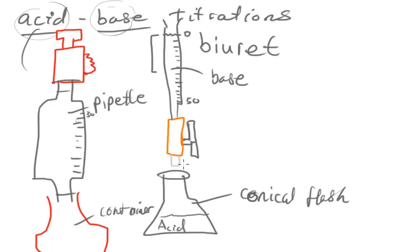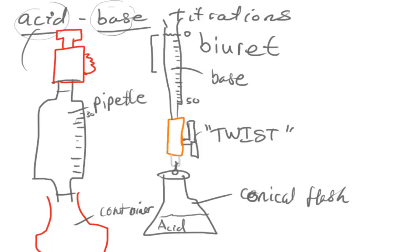By twisting the tap, the base starts to flow out and drip into the acid. But how would we know when the base has completely neutralized the acid? The way chemists have solved this problem is by using something known as an indicator. Indicators are substances which change color when certain pH levels are crossed.